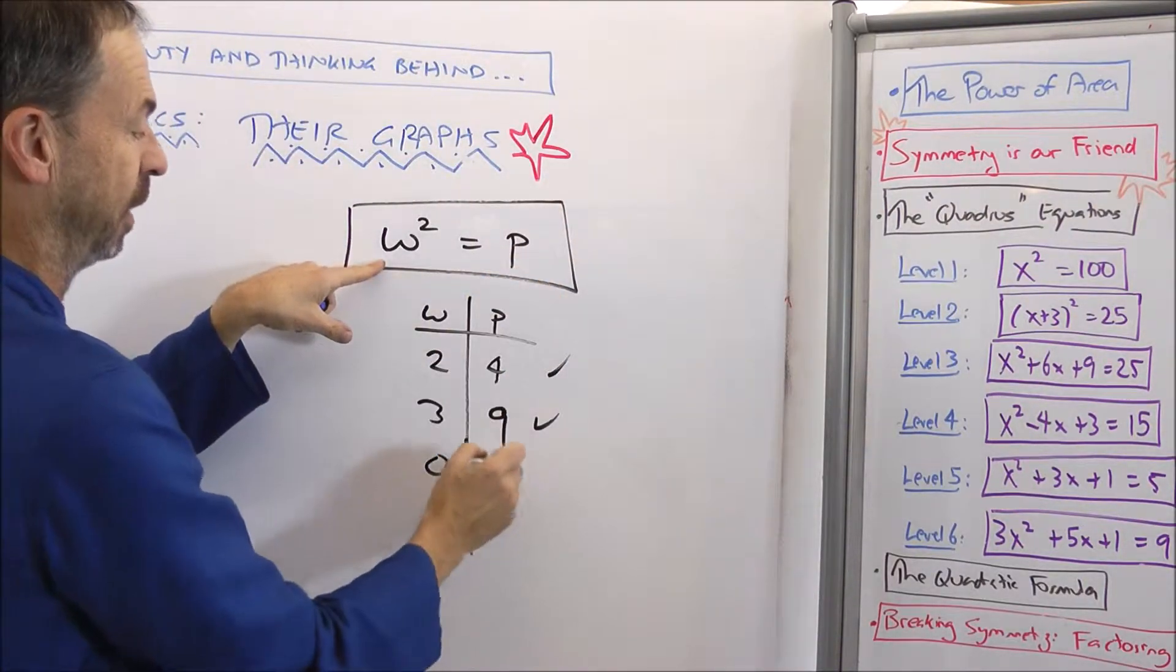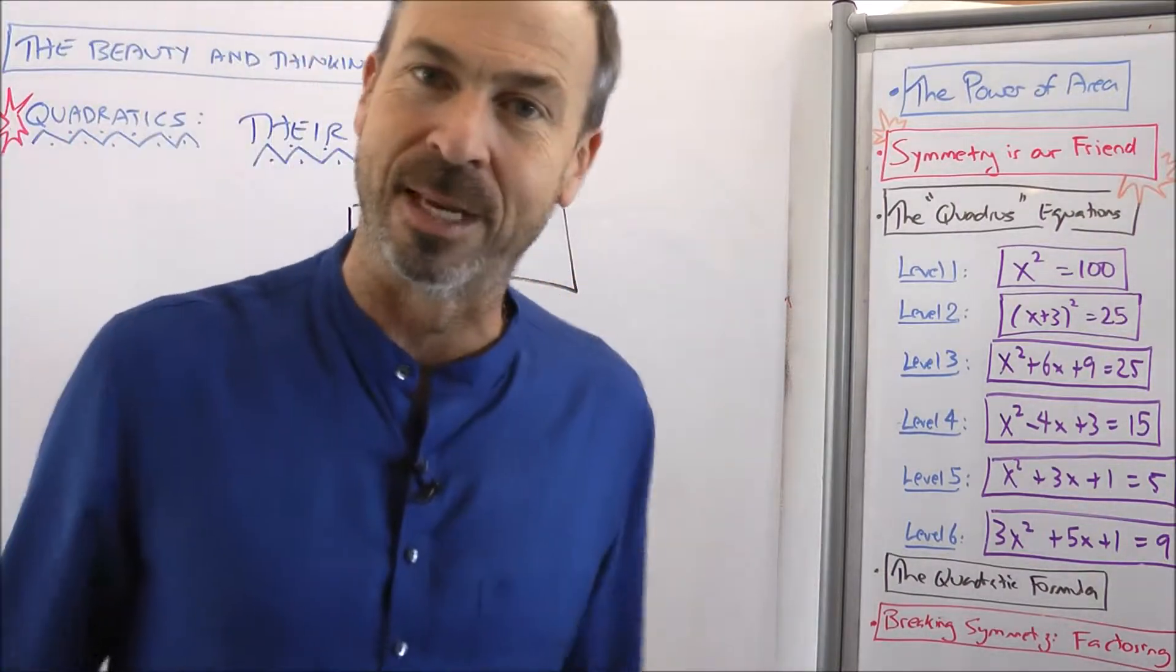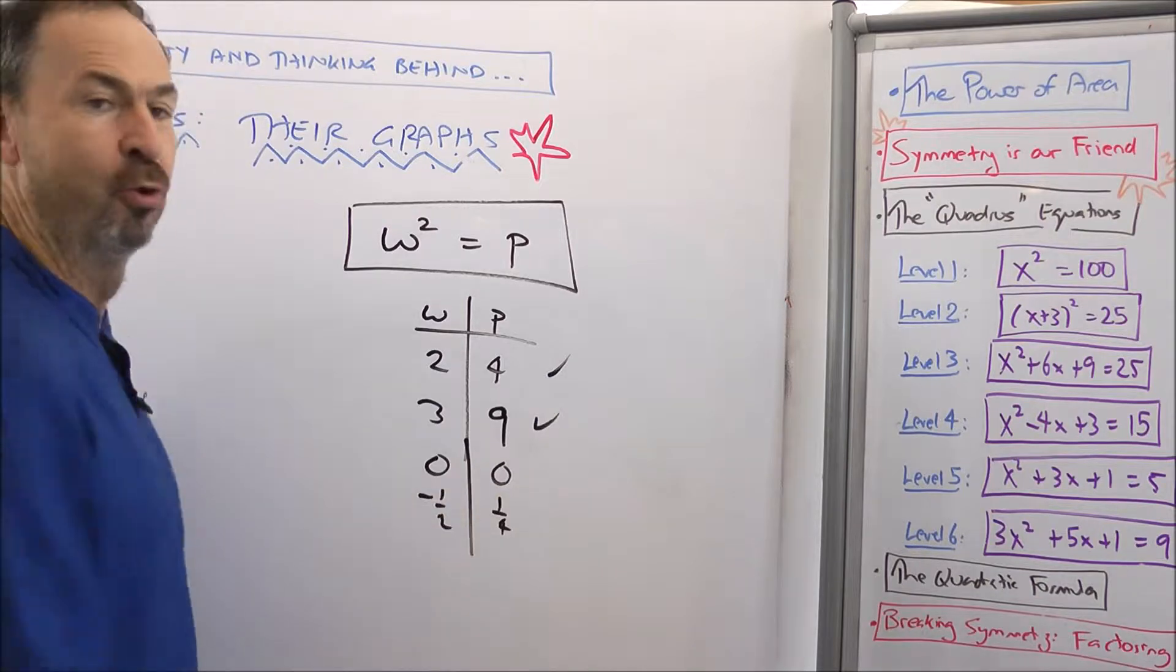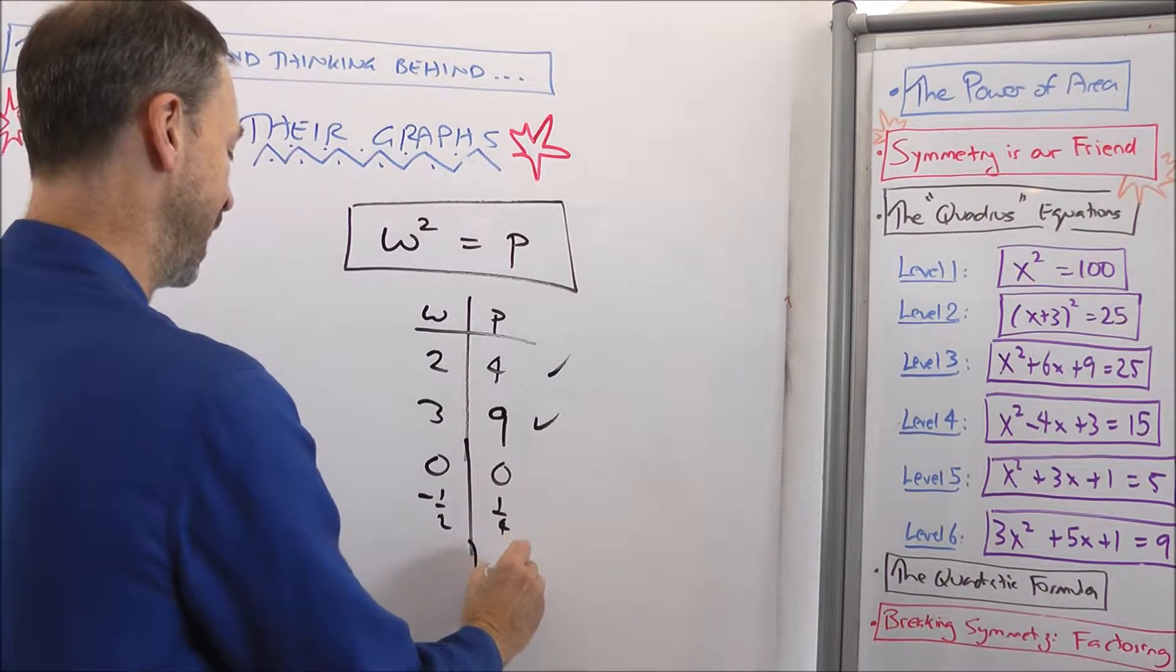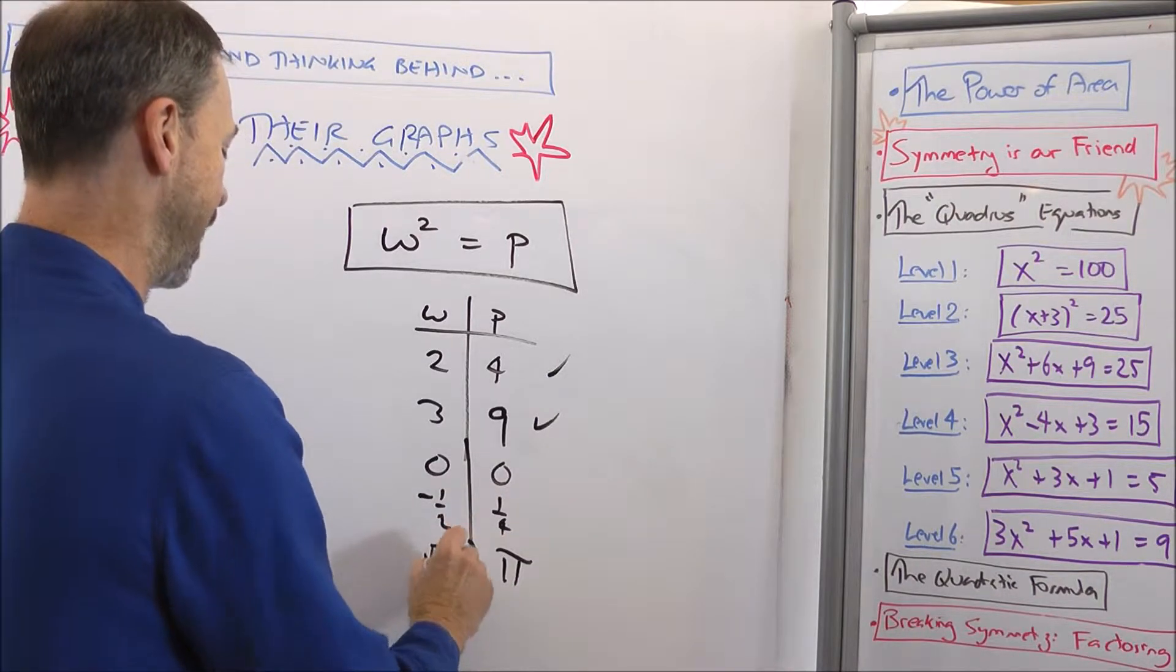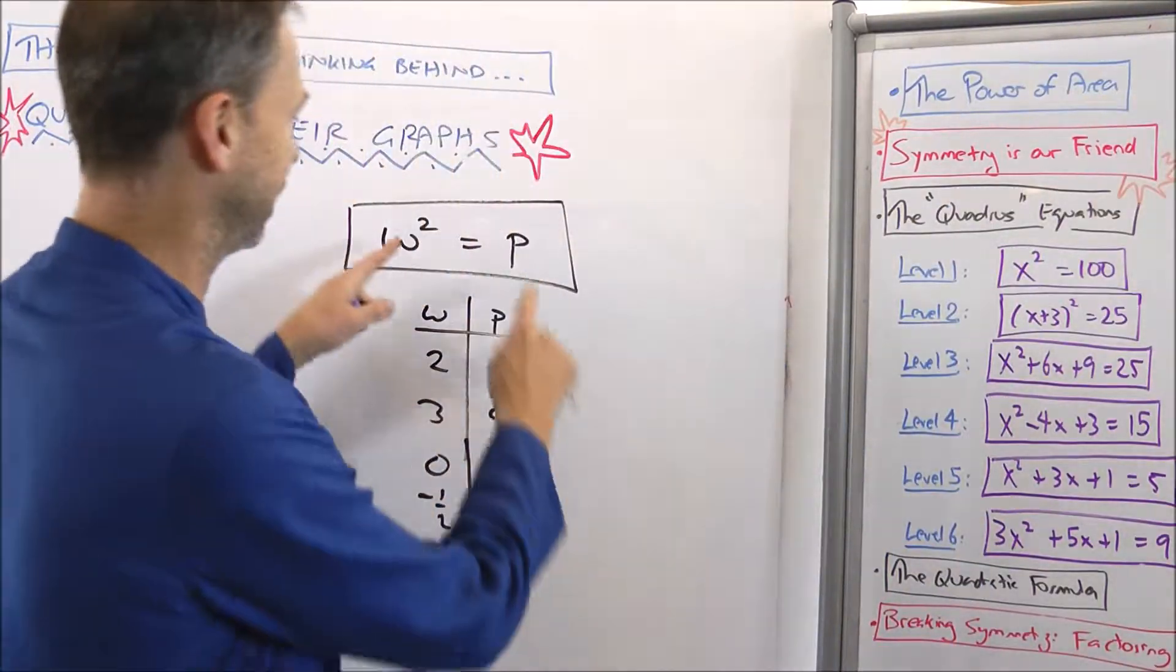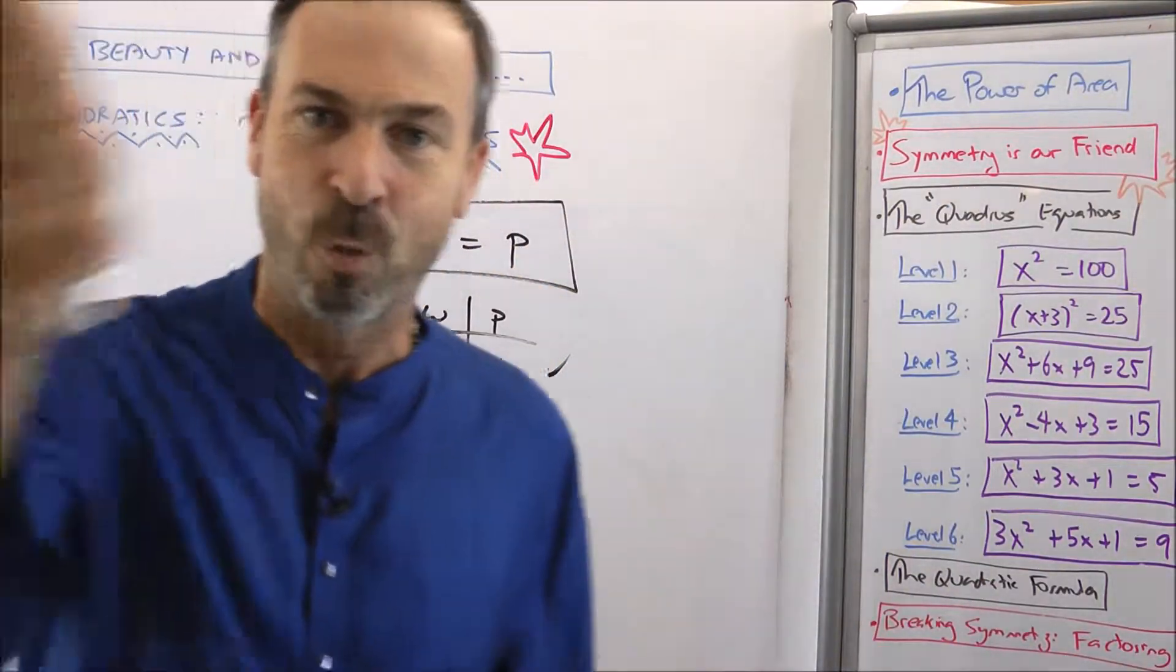You can do all sorts of weird things like when W is 0 and P is 0, that'll be a true number sentence. When W is negative a half and P is a quarter, that'll be a true number sentence. When P is pi and W is the square root of pi, that'll be a true number sentence. We can collect all the data that makes us a true sentence about numbers. Welcome to mathematics.